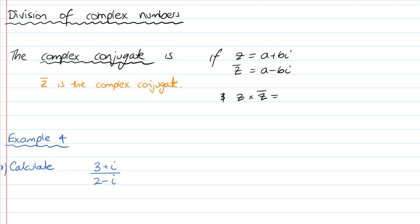First I need to define something called the Complex Conjugate. A conjugate is a little bit like the conjugate you may have used in your work on surds. We've got Z, which is our complex number, a plus bi for some real numbers a and b. Z bar — that little bar above — is called the conjugate of Z, and we just change the imaginary part to be negative.